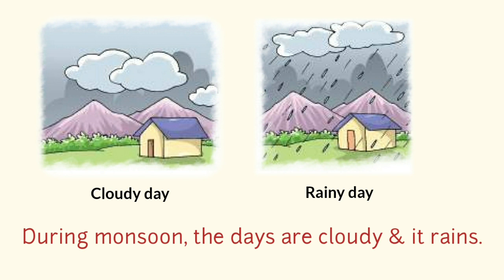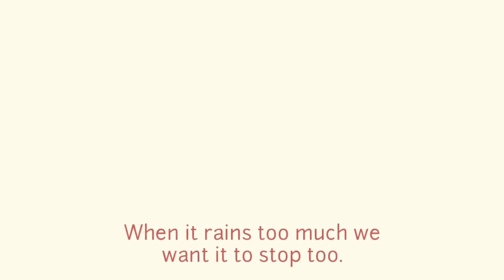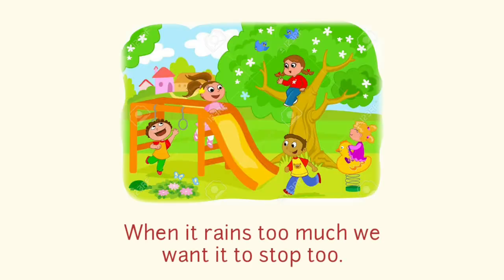When rain falls, it makes a rainy day. And after the rain, we may also see a rainbow. Children, we all love to see a colorful rainbow in the sky, right? And yes, when it rains too much, we want it to stop too — because we want to go out and play with our friends.